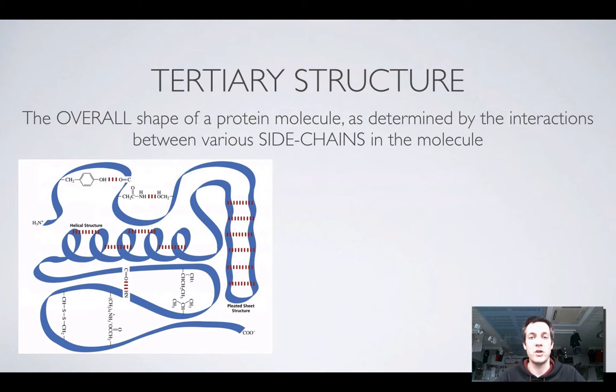Now what do we mean by side chains? Well, they're the R groups of amino acids in the chain. If the R group of one amino acid residue can interact with the R group of another amino acid residue further along the chain, this will give rise to the tertiary structure of a protein.